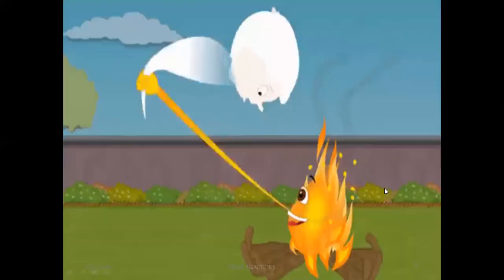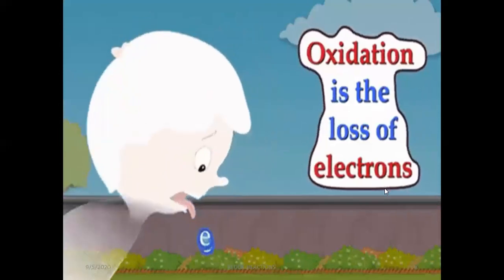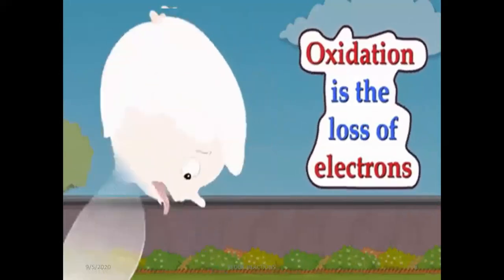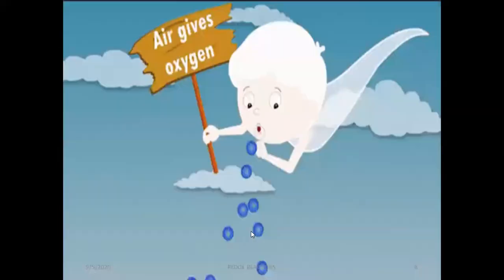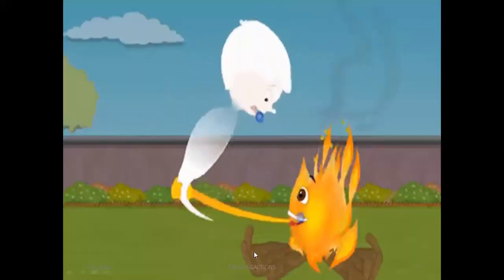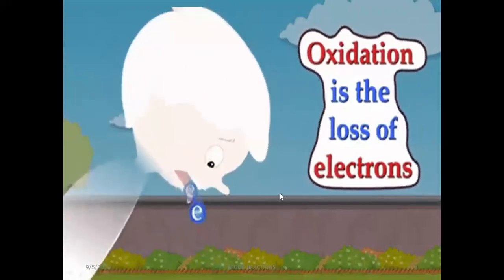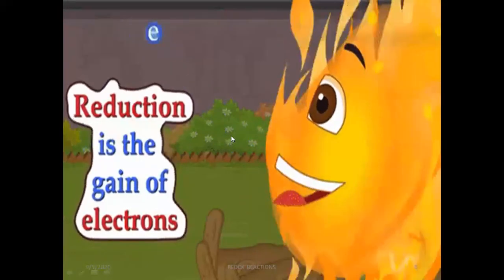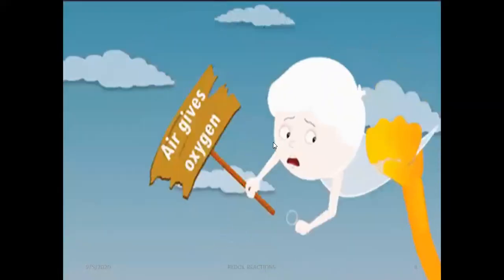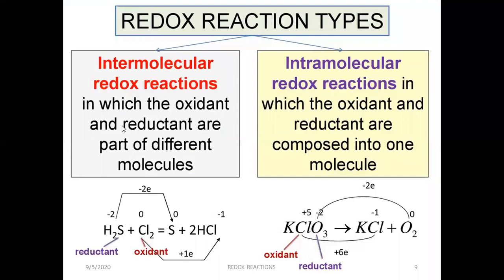This GIF shows that loss of electrons means oxidation and reduction is the gain of electrons. It also shows that fire burns more brightly when it comes in contact with oxygen, which is due to redox reactions. Now let us see the types of redox reactions.